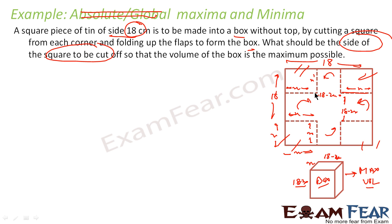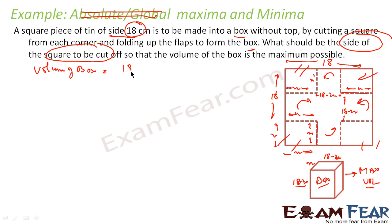Let me clarify once more. This side is 18 minus 2x because the whole thing is 18, minus x on each end. Similarly, the other side is also 18 minus 2x. And this particular length, when we fold it, becomes x — one part of the box. So the sides of the box will be 18 minus 2x, 18 minus 2x, and x. Therefore, the volume of the box will be length times breadth times height: (18 minus 2x)² times x.